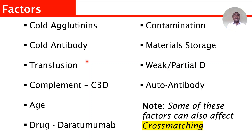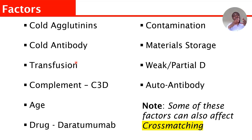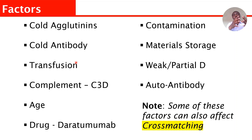Another thing that can affect it is transfusion. If somebody who is O positive receives O negative blood, in the patient's system there is D antigen (the patient is O positive) and there is D antigen negative (the donor cell, O negative). When you do the blood group, you will see that the patient cell goes up in the anti-D well while the donor cell comes down. This leads to what we call dual population.